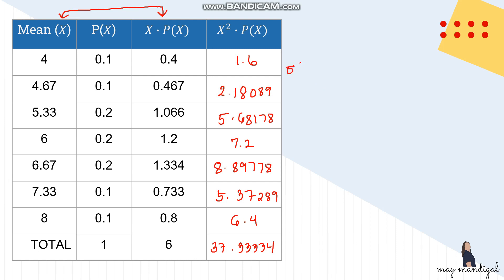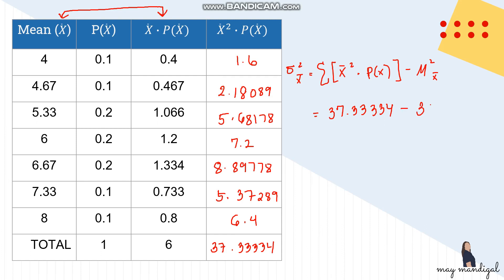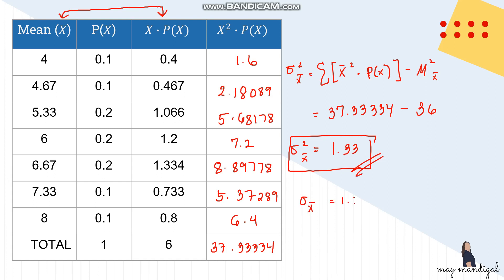Now solve for variance using: Σ(x-bar² × P(x-bar)) − (mean of sampling distribution)². That is 37.33334 − 6² = 37.33334 − 36 = 1.3333. The variance is 1.3333. For standard deviation, take the square root: √1.3333 ≈ 1.15.